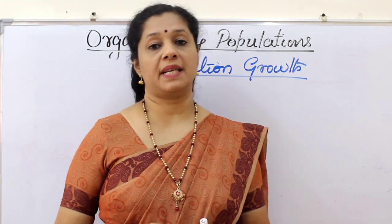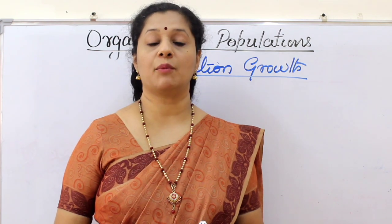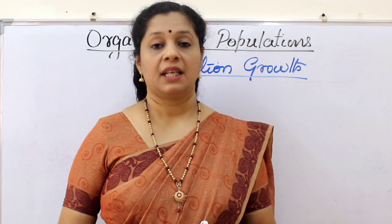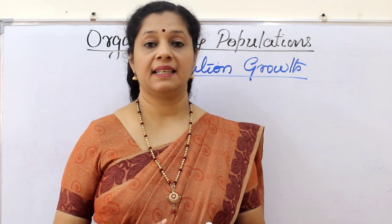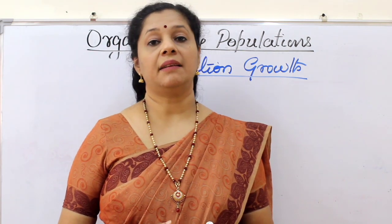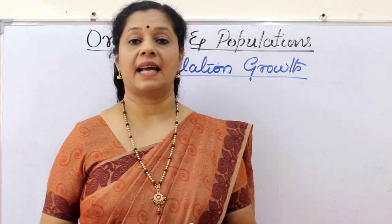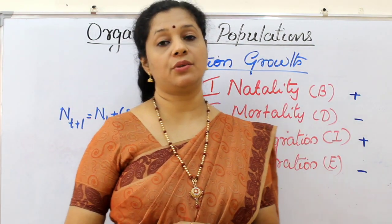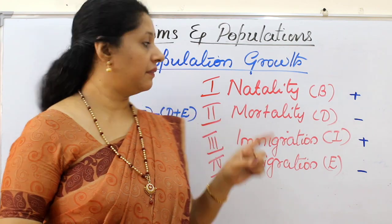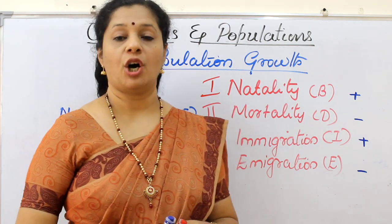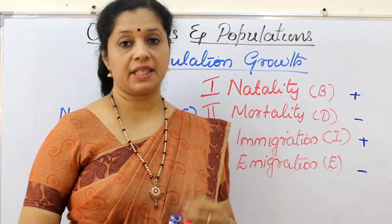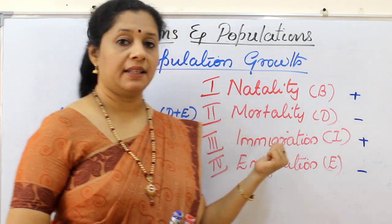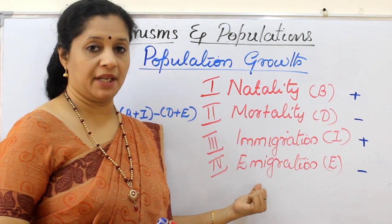There are four basic processes that influence the population of a given habitat at a particular period of time. Population density in a given habitat fluctuates due to four main factors: the first is natality or the birth rate, the second is mortality or the death rate, then immigration, and then emigration.